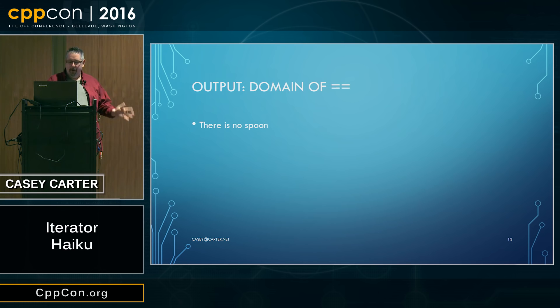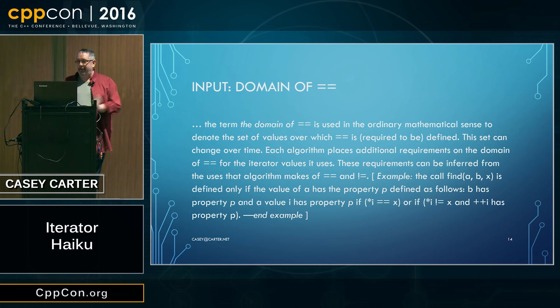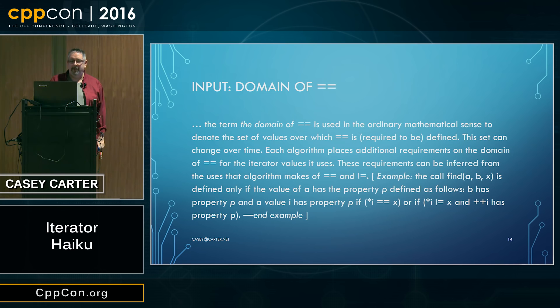This is how the C++ standard defines it, with one of my favorite paragraphs of text in the standard. The term 'domain of equality' is used in the ordinary mathematical sense to denote the set of values over which equality is required to be defined. This set can change over time. Each algorithm places additional requirements on the domain of equality for the iterator values it uses. These requirements can be inferred from the uses that algorithm makes of equals and not-equals.